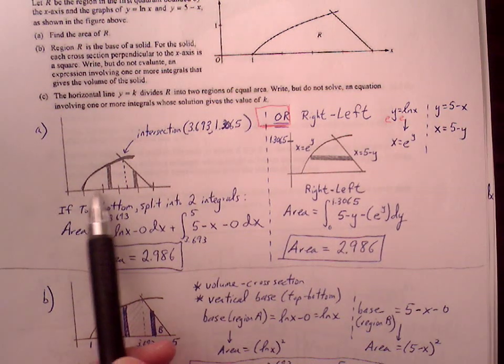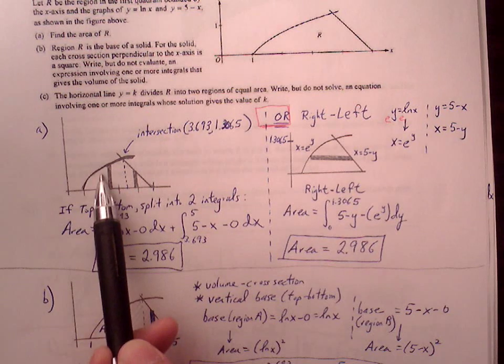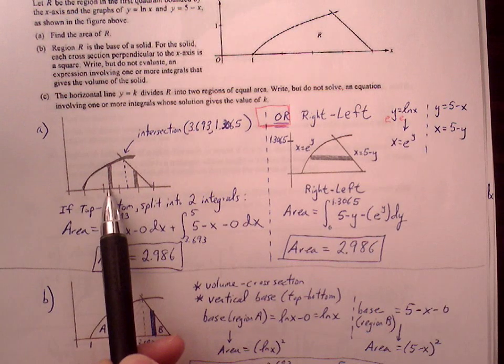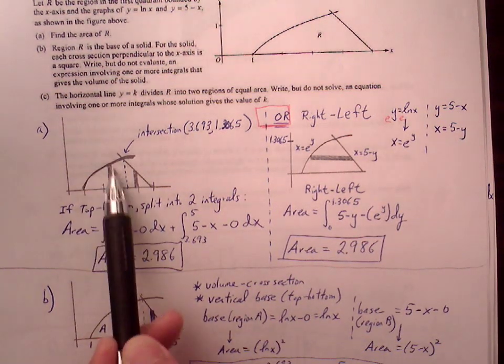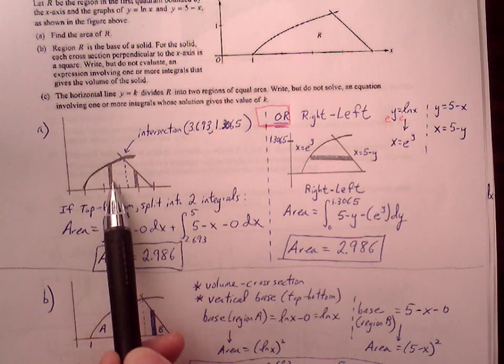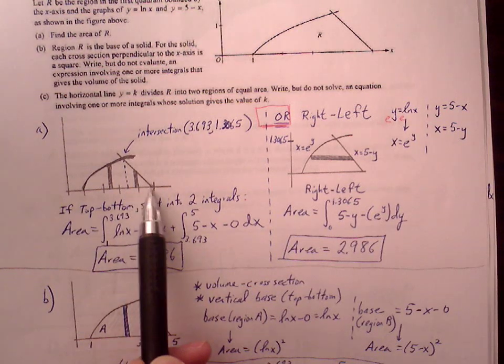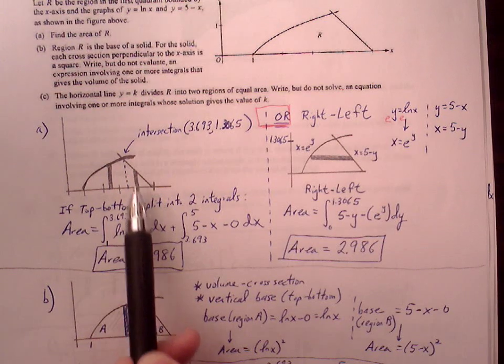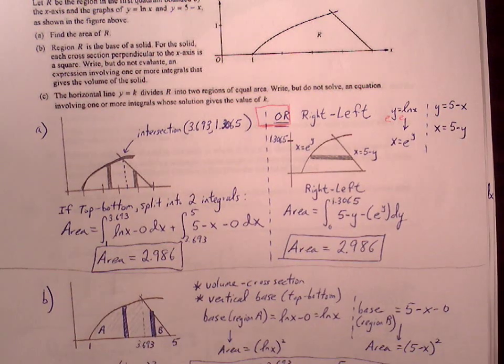The first region is from 1 to 3.693. The top boundary is natural log of x and the bottom is 0, so natural log of x minus 0 between 1 and 3.693 represents the left region. The region on the right, from 3.693 to 5, has top boundary 5 minus x and bottom 0. We enter both in our calculator and get an area of 2.986.